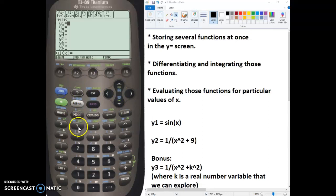So we'll enter in sine of x, we'll enter in 1 over the quantity x squared plus 9, and then we'll also enter in the quantity 1 over x squared plus k squared, where I'm going to use the alpha key, k, and square that.